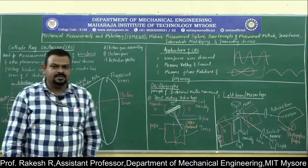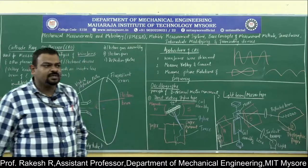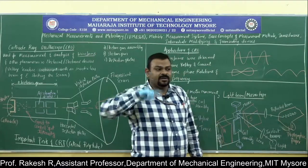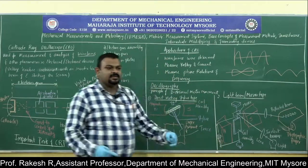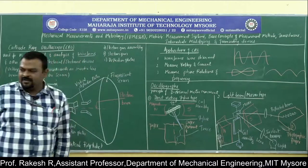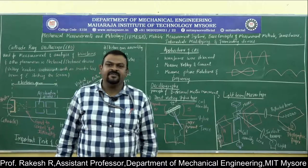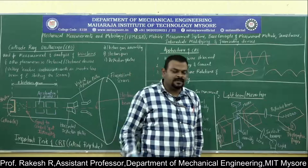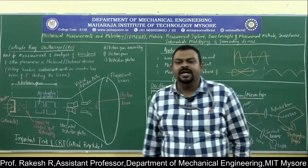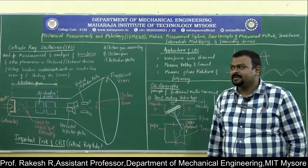From oscillograph principles, XY plotters were also developed. While an oscillograph draws only one dimension (X or Y), an XY plotter draws both dimensions simultaneously using two styluses. This concludes Module 4. The module covered the generalized measurement system with its three components: transducer, intermediate modifying devices, and terminating devices — studied in detail.